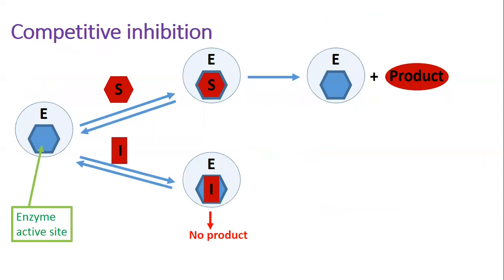Competitive inhibitors compete with substrates for the active sites of enzymes. They resemble the substrate molecules and fit in the active sites, leaving no room for the substrate to bind. Recall that the rate of enzyme-catalyzed reactions depends on the interaction between enzyme and its substrate and the formation of the enzyme-substrate complex. Competitive inhibitors diminish the rate of catalysis by reducing the proportion of enzyme molecules bound to substrate molecules.